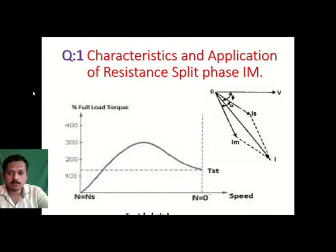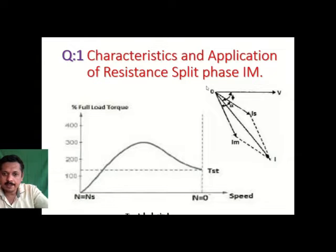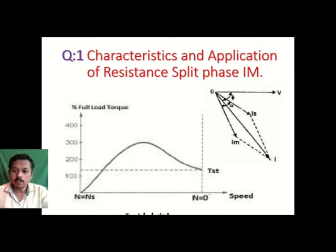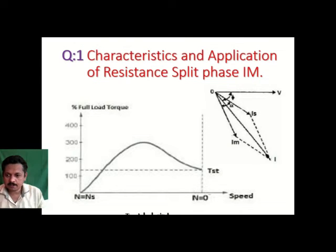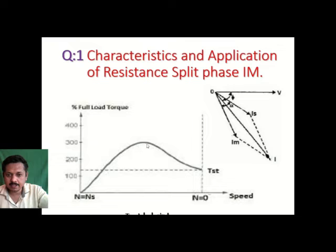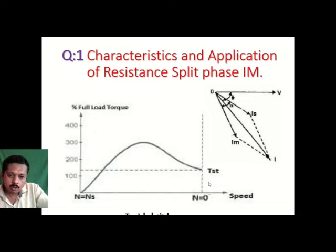First question: characteristics and application of resistance split phase induction motor. This is the torque-speed characteristic of an induction motor having resistors in the auxiliary winding. The special design in the resistance split phase motor is that the main winding is designed with very fine components. When current starts flowing through the main winding it rises very quickly, and because of this we can get more than 100% torque at the initial stage, going up to 300% of full load torque.